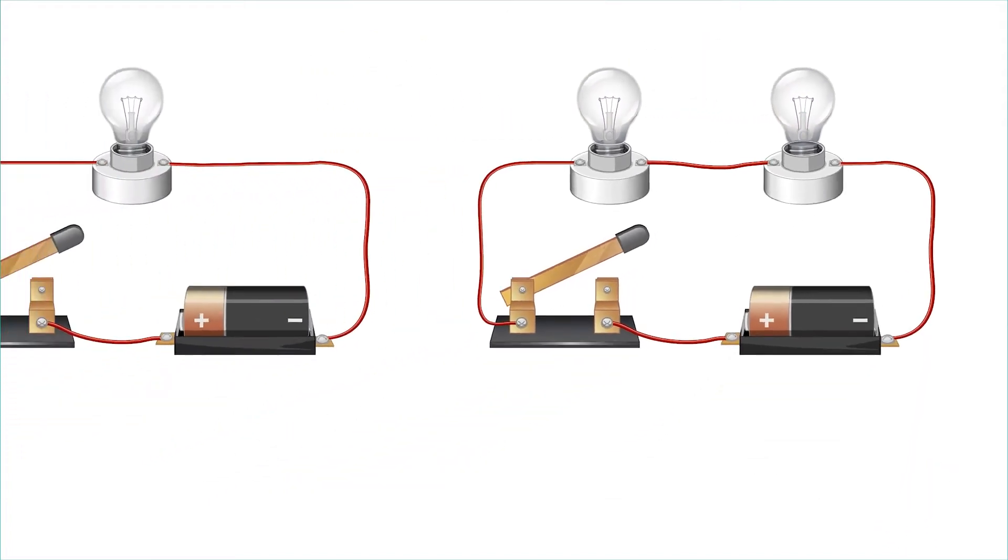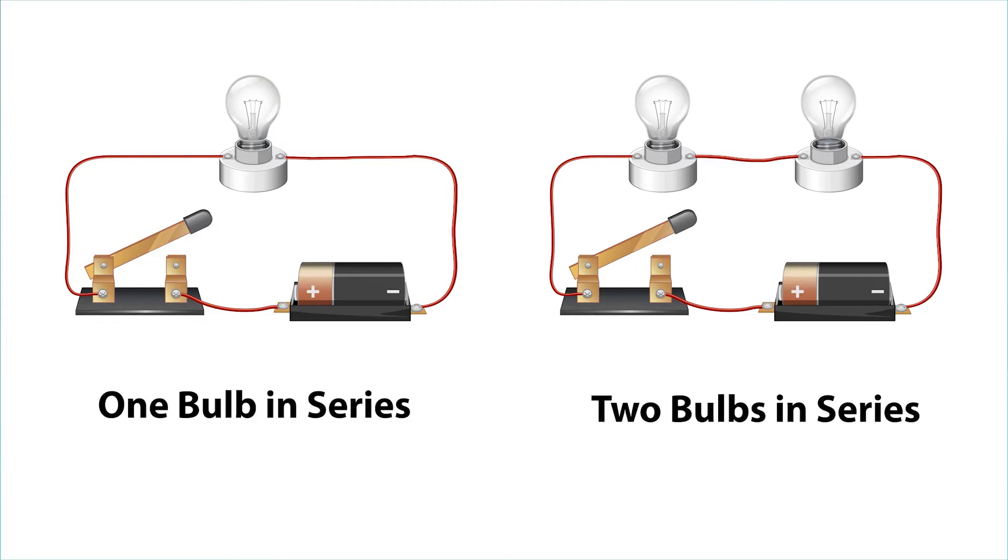When there was only one bulb, it was bright. But with two bulbs, they became much dimmer. This is because now the bulbs must share the voltage, resulting in each bulb only getting half as much energy. So they only burn half as brightly.